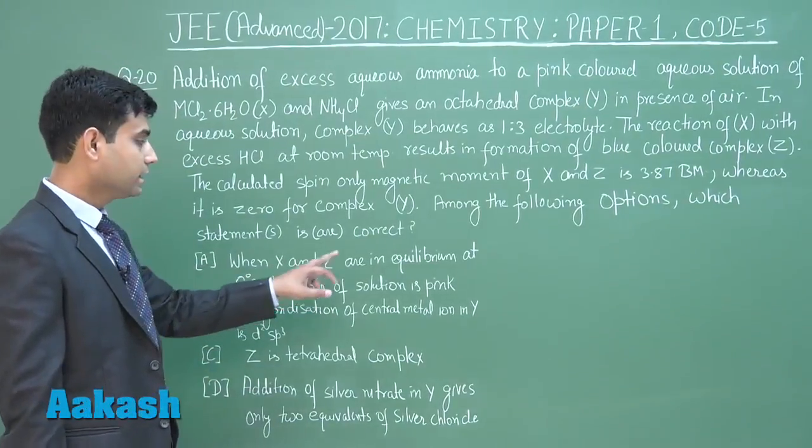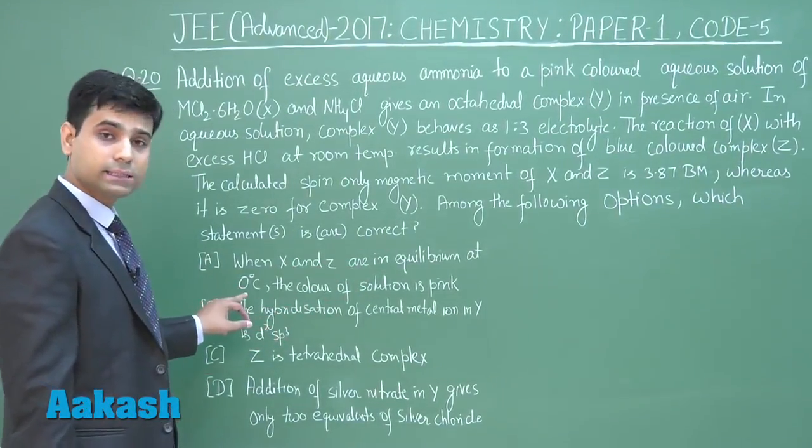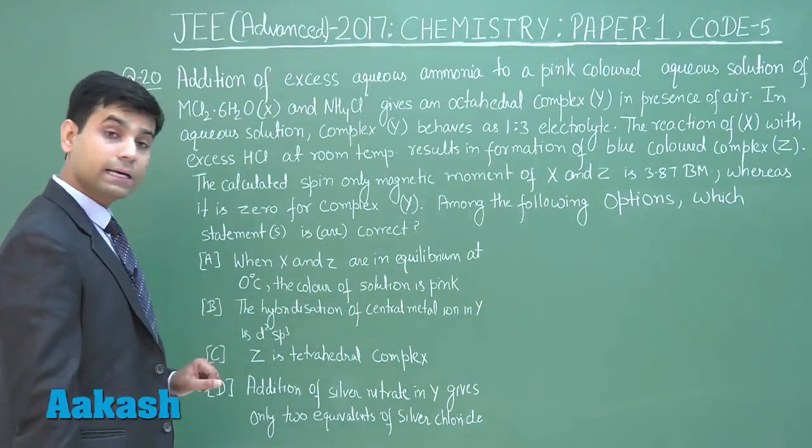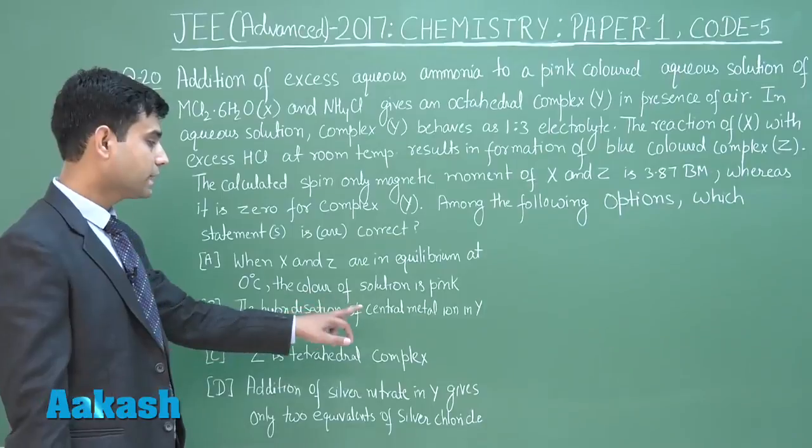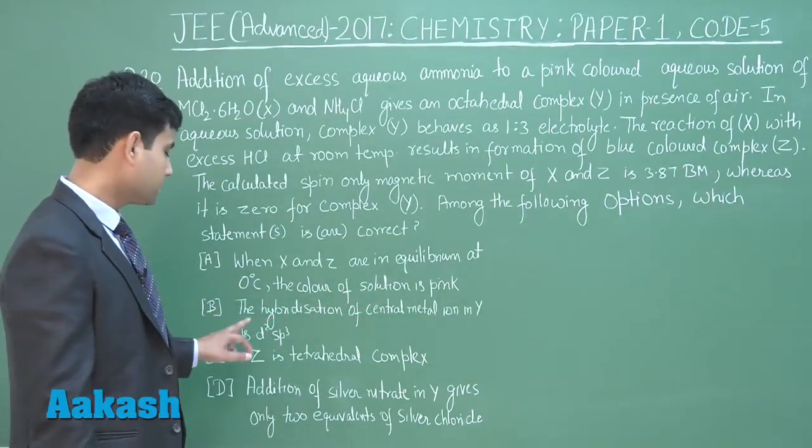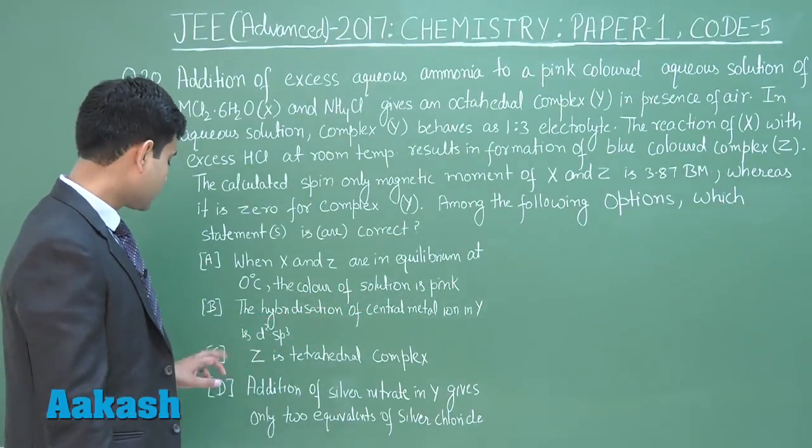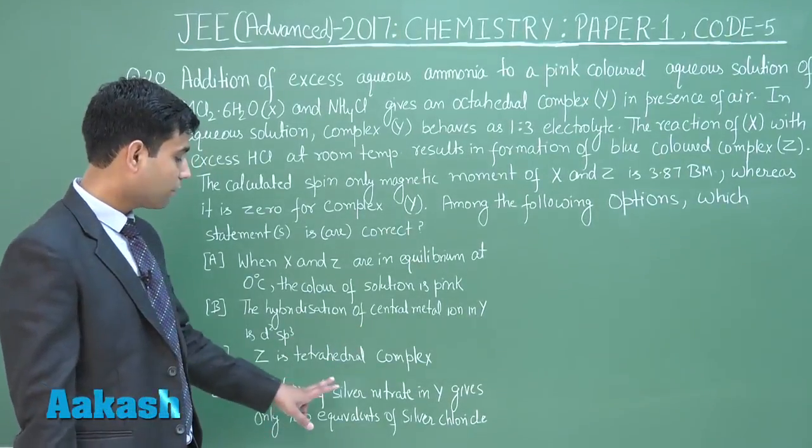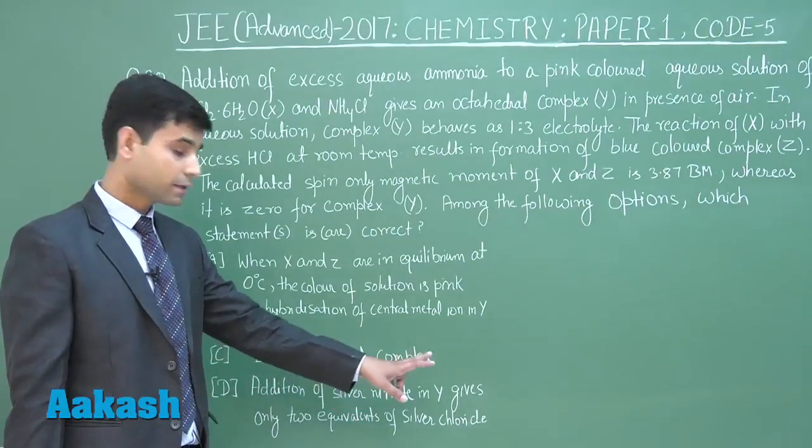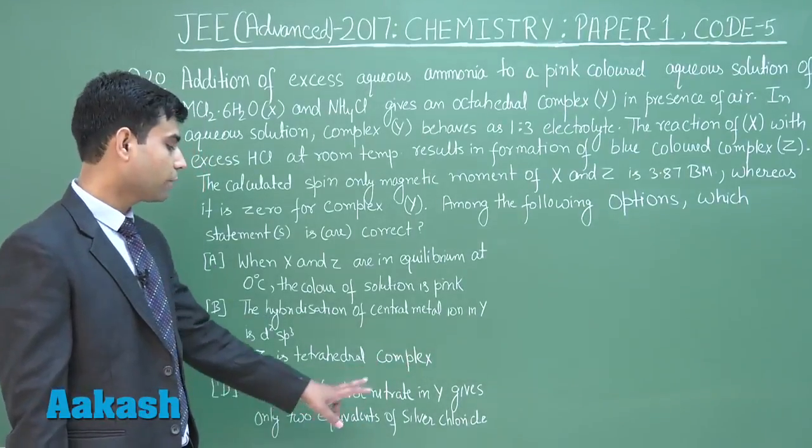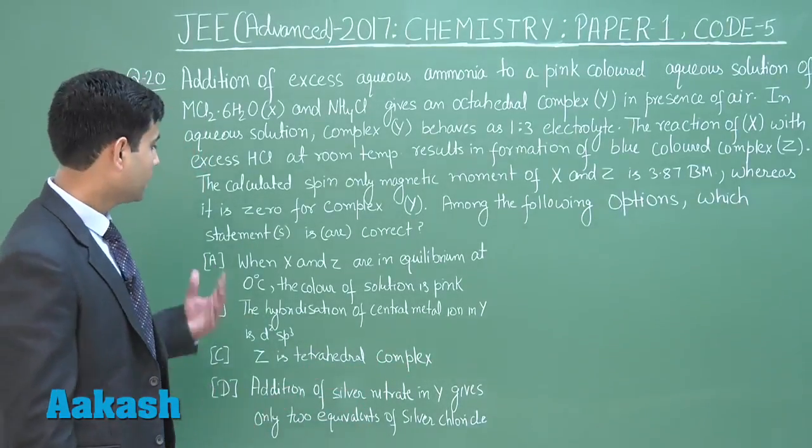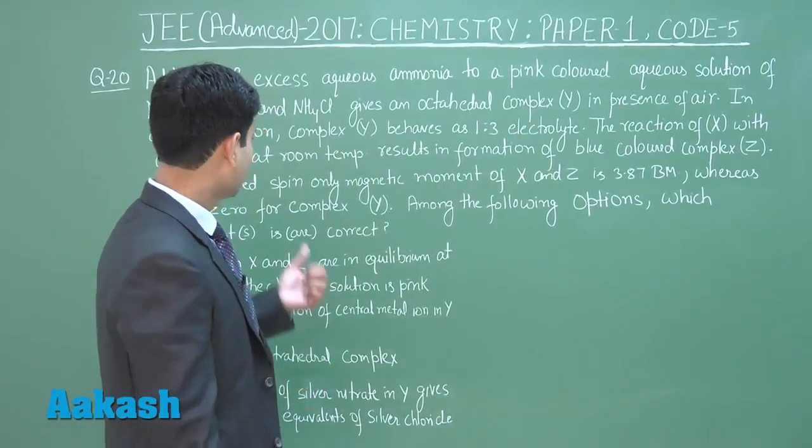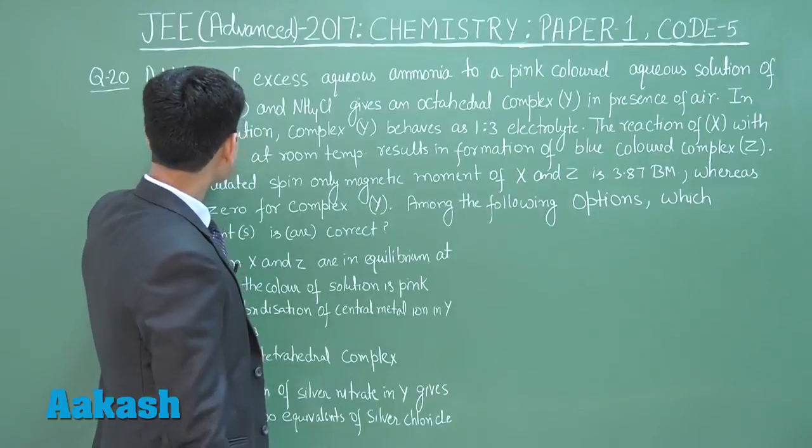Statement A: When X and Z are in equilibrium at 0°C, the color of solution is pink. Statement B: The hybridization of central metal ion in Y is d2sp3. Statement C: Z is tetrahedral complex. Statement D: Addition of silver nitrate in Y gives only two equivalents of silver chloride. Let us solve this question.